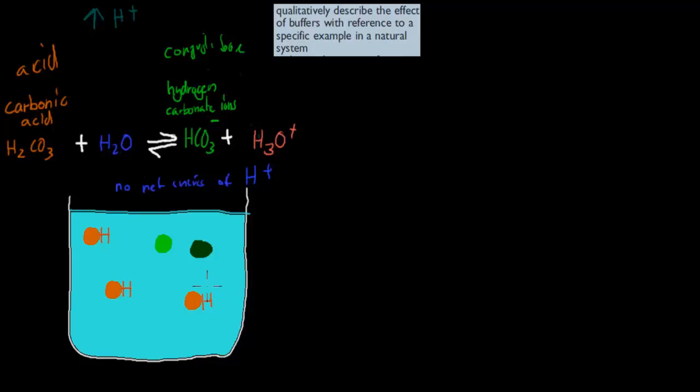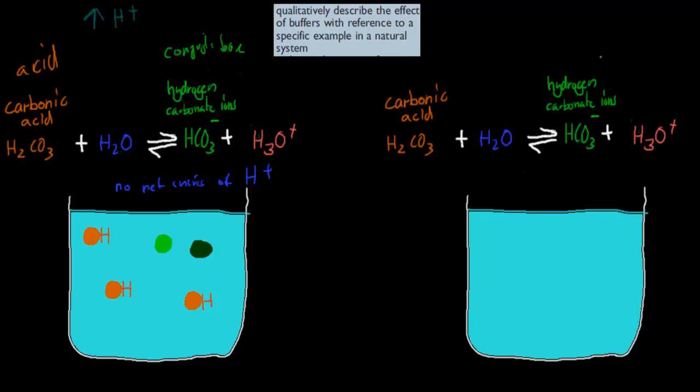In this case, our buffer has made sure to suck up that extra hydrogen ion, which means pH overall stays the same. It's still neutral, there's no change in pH. Now, if we do the flip, we have carbonic acid, same equation, but we have sodium hydroxide, NaOH.